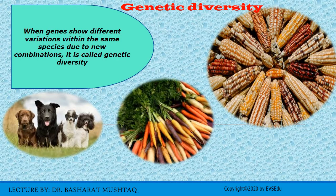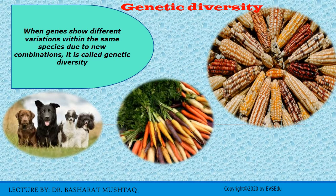Let us first discuss genetic diversity. When genes show different variations within the same species due to genetic combinations, it is called genetic diversity. You can take a look at these pictures. Here is a picture of maize, which shows variations within the grains — some differ in color. This is due to variation within the same species resulting from new genetic combinations. Similarly, this applies to dogs and carrots, showing genetic variation both among geographically separated populations and among individuals within a single population.